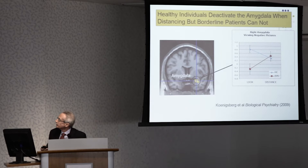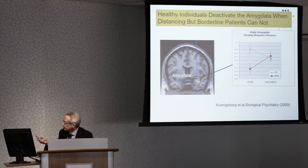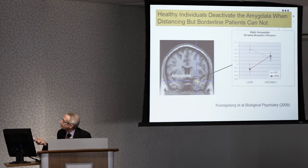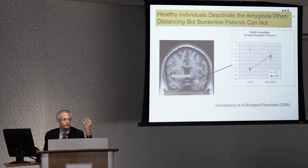In the amygdala we found, as we would expect, the reverse. Healthy people, when they distanced, were able to down-regulate the amygdala, and borderlines were not able to down-regulate — if anything, it increased in activity. This makes sense because these frontal regions I showed you in the previous slides are what down-regulate the amygdala.